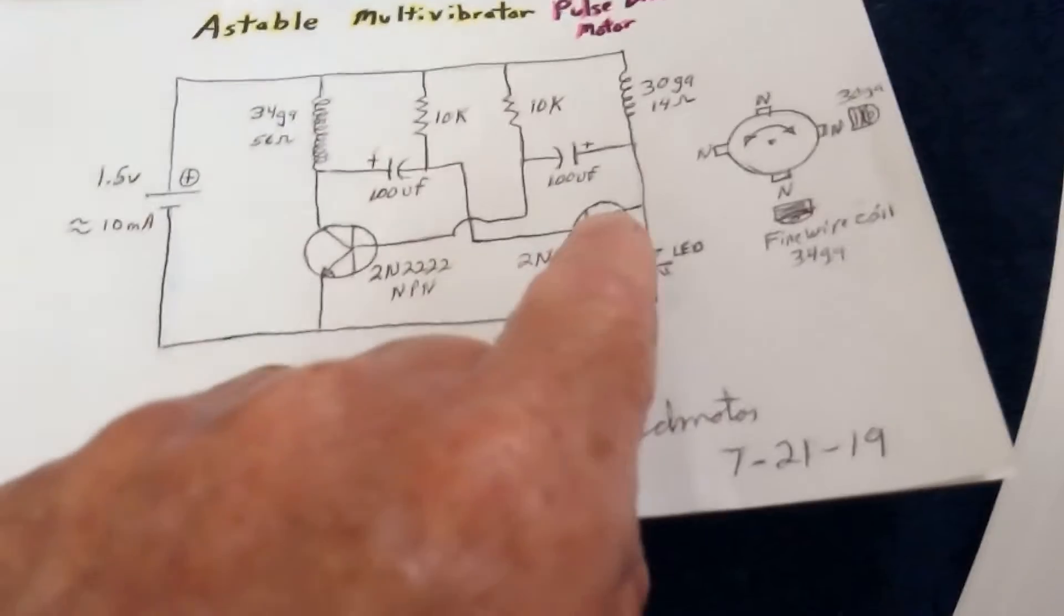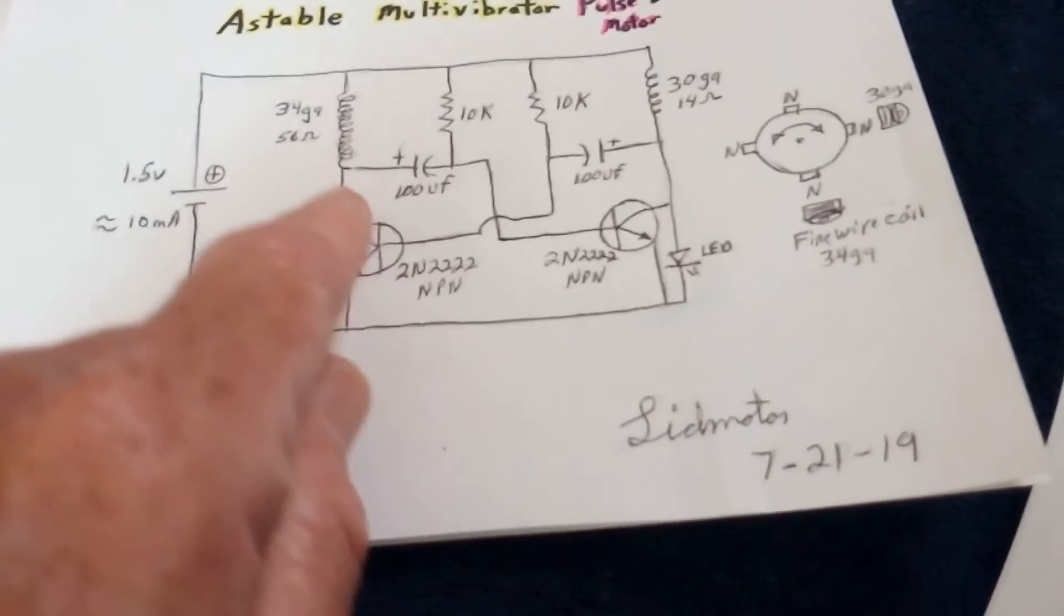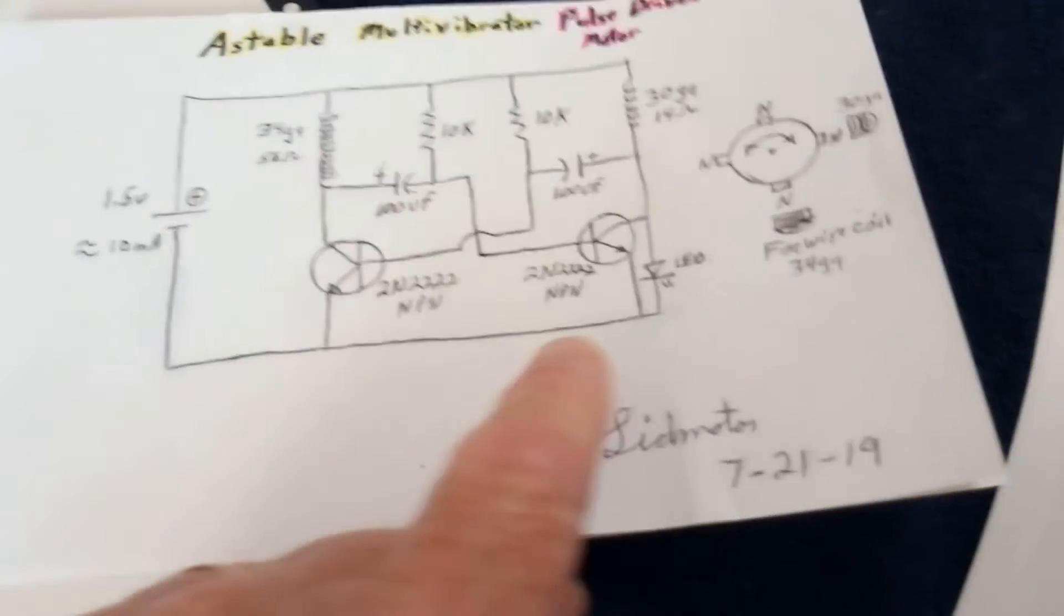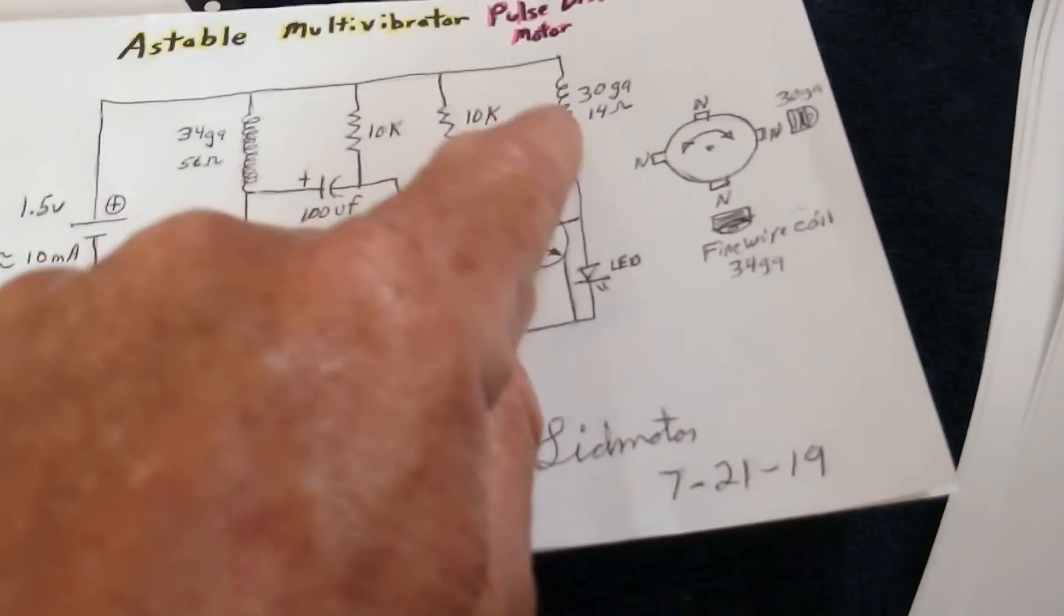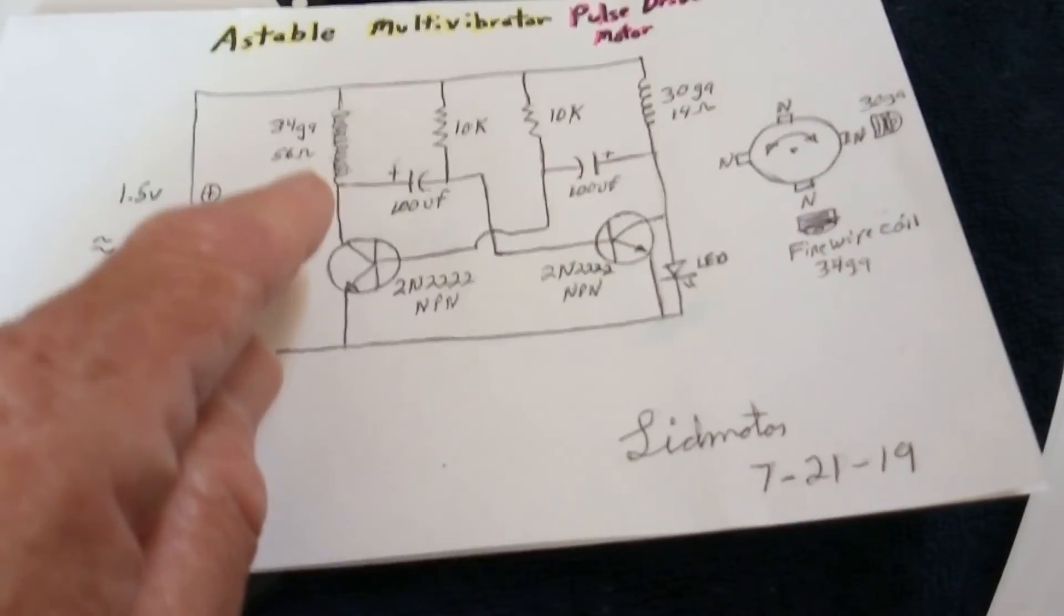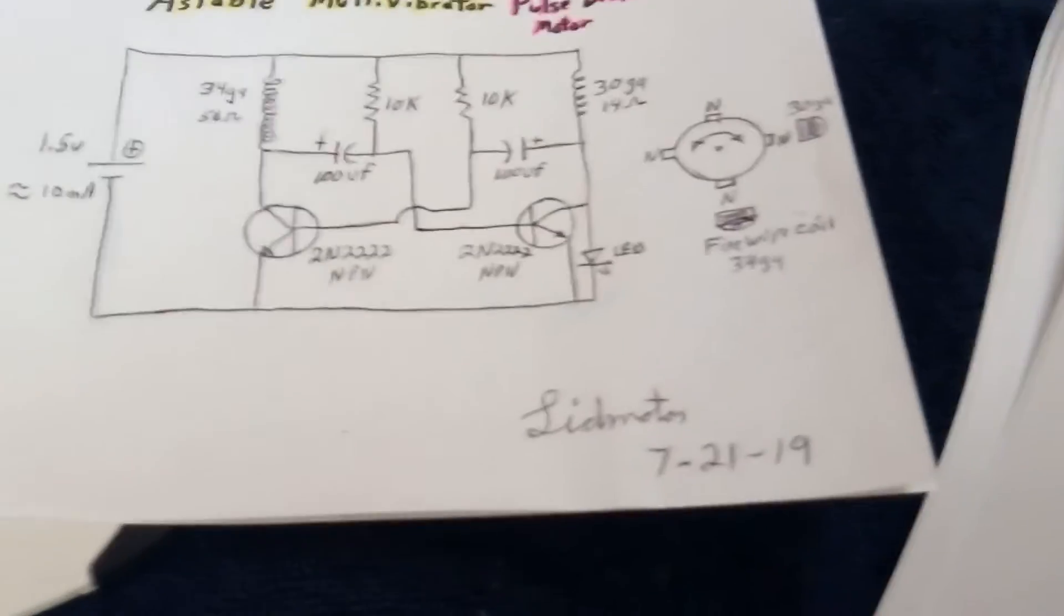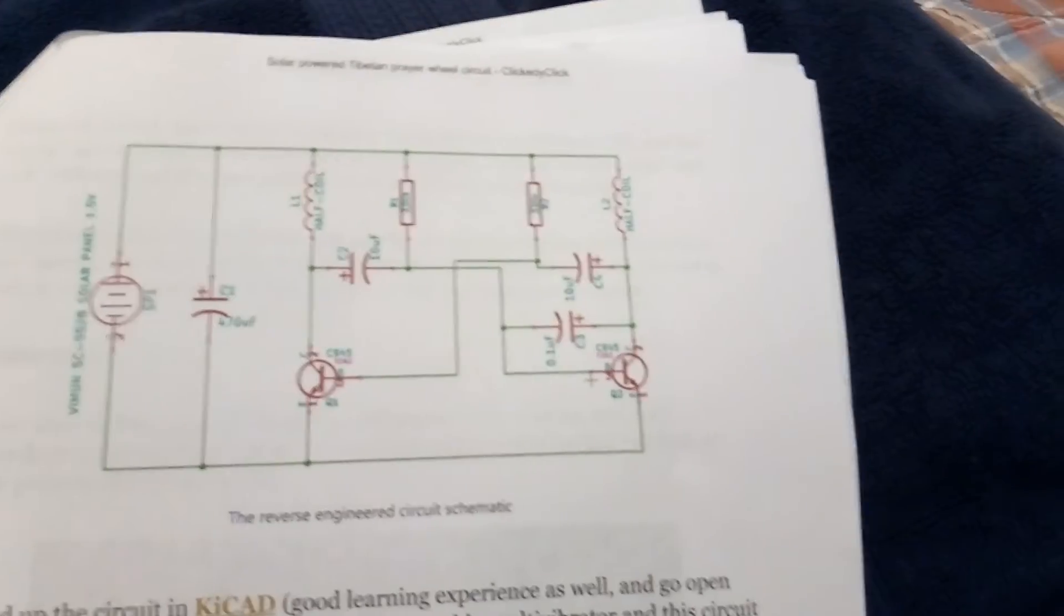It's just a standard flip-flop multivibrator circuit with a couple of variations going on here. Here, this is really the drive coil. This, I believe, is like a sense coil that triggers the thing. But I tried all different kinds of things, and this is the only thing I could get to work. And it's a variation of that circuit there.